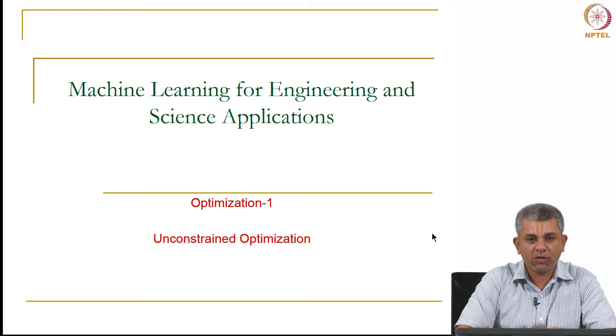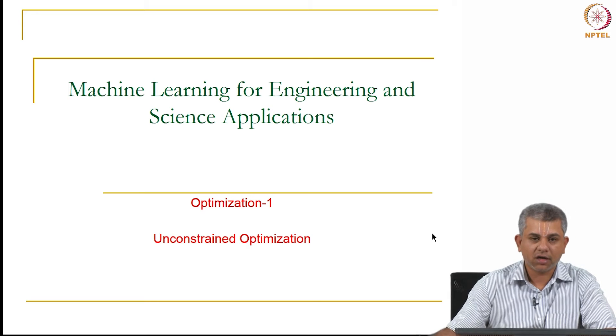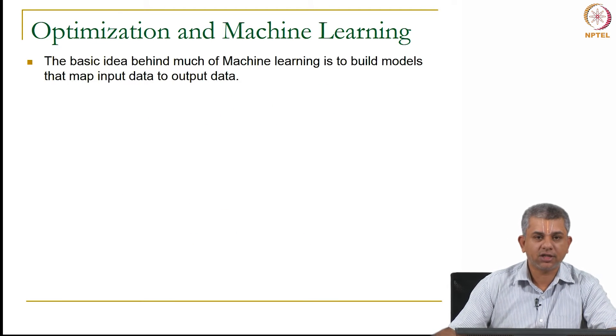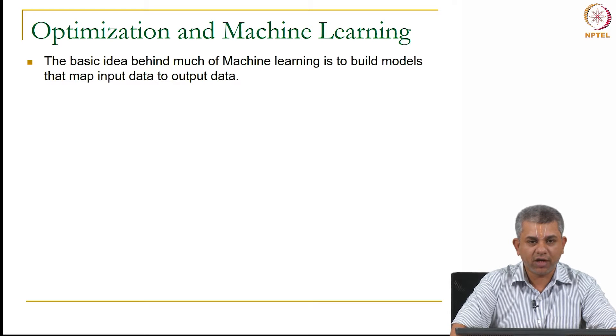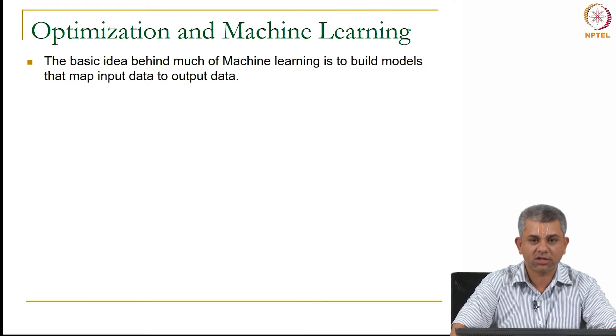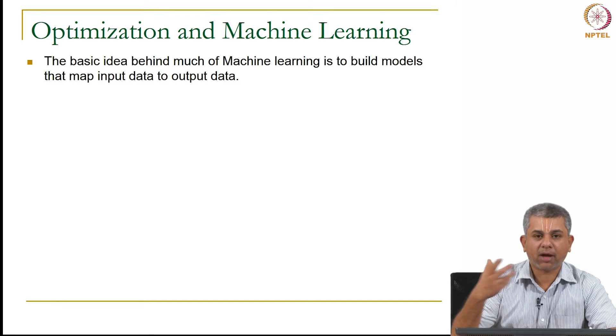In this video we will be looking at the beginning of optimization, specifically unconstrained optimization. The relevance of optimization to machine learning is very high. As we saw in the first week, the basic idea behind most of machine learning is that you want to build models, data models that take some input and map it to output data.